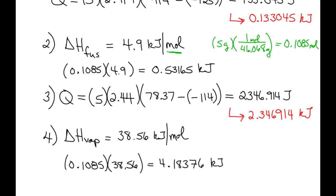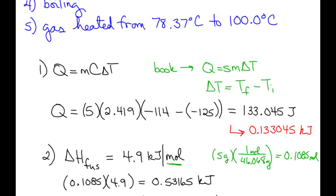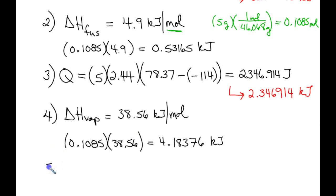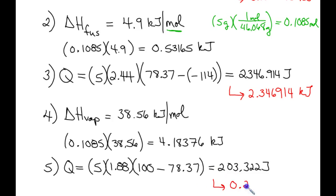Step five. We are now in the gaseous state, and we're going to heat from the boiling point to 100 degrees Celsius. So this is another Q equals MCAT step. So 5 times specific heat capacity for the gas is 1.88 joules per gram degree Celsius. And we are going to 100 from 78.37. And again, this is going to be in joules, and we will need to convert. So that would be 0.203322 kilojoules.